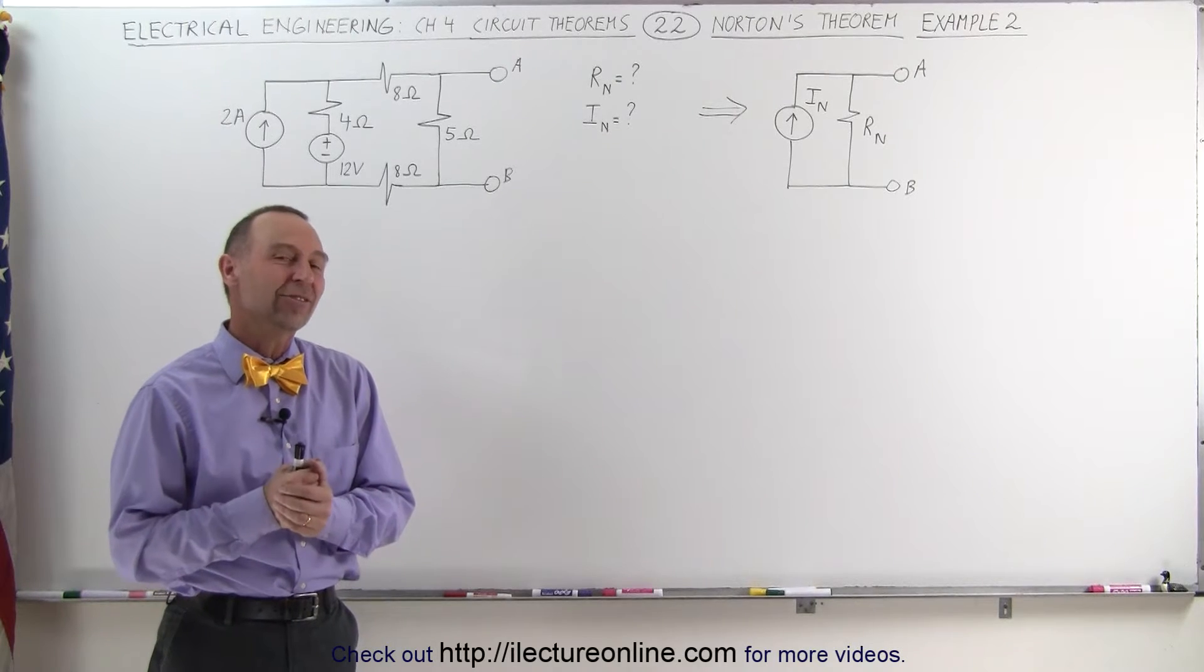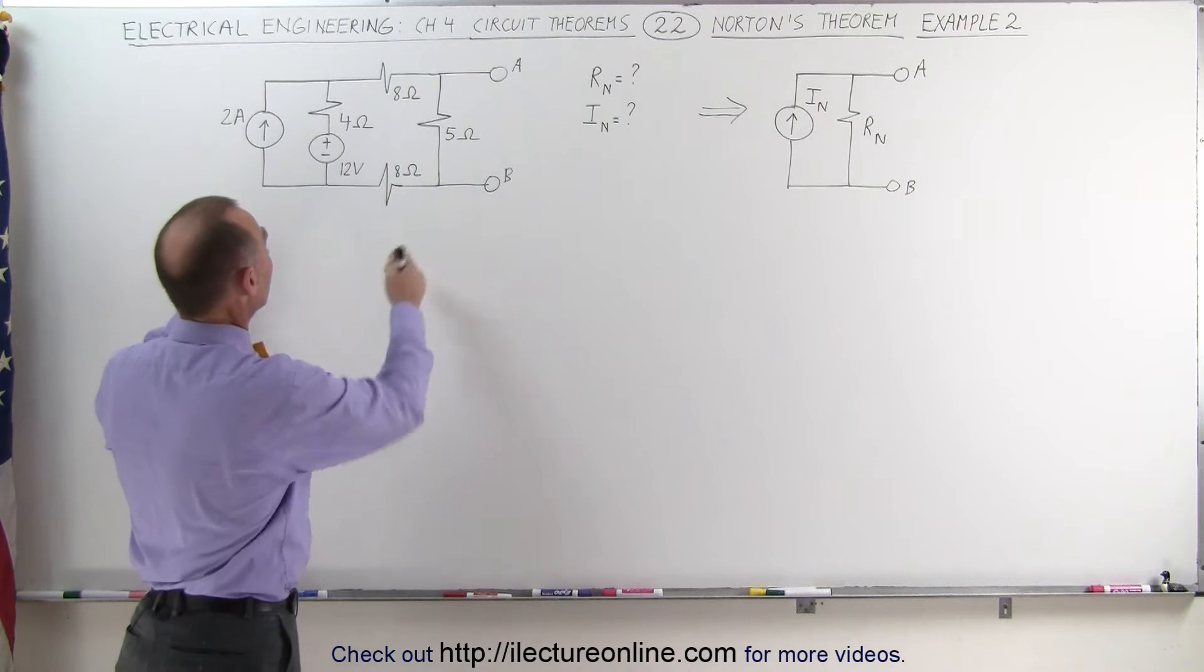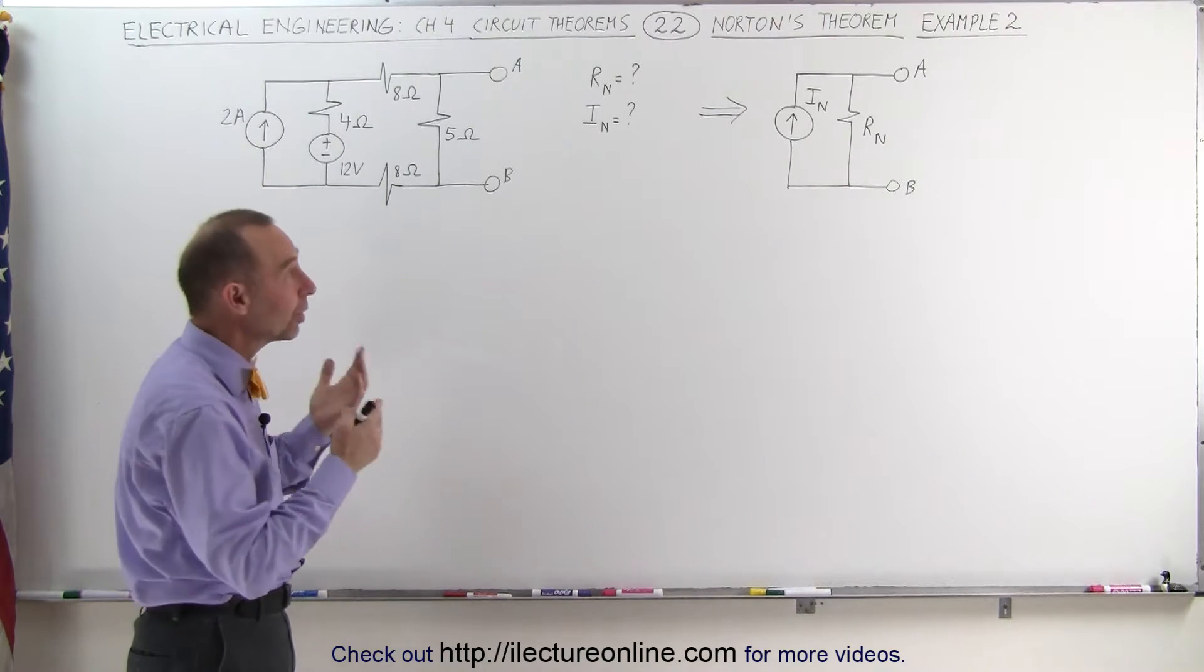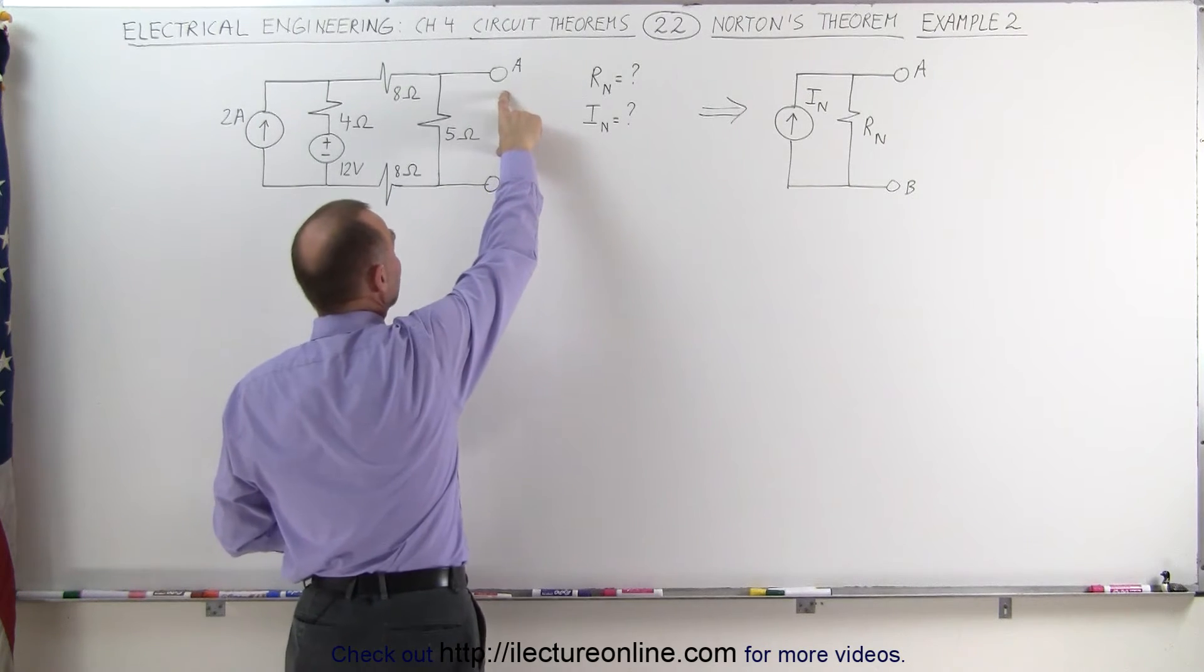Welcome to ElectronLine. Now let's try our hand on a slightly more difficult problem. Here's our new circuit and we're trying to find the equivalent Norton circuit because that will allow us to find the current through any load resistor we connect between A and B.